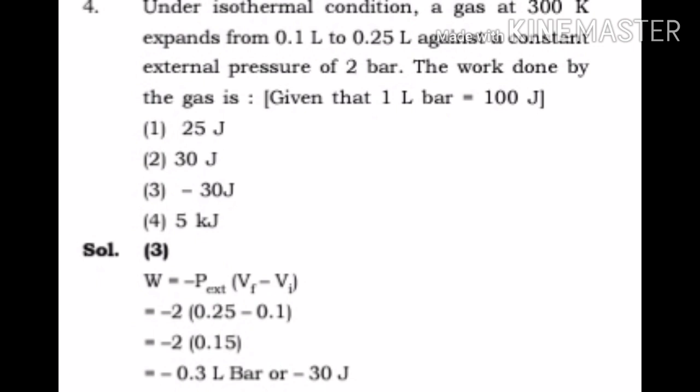We have to calculate W isothermal. We know the formula W isothermal equals minus P external times (V final minus V initial). Putting the values, we get W equals minus 2 times (0.25 minus 0.1), which equals minus 30 joule.